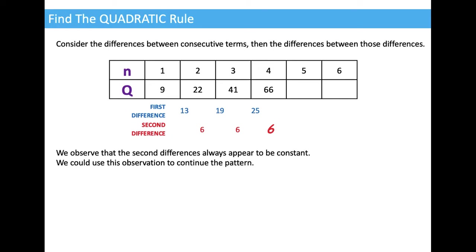We would expect the next first difference to be 31 — that's 25 plus 6. Then we would expect the next term to be 66 plus 31, which is 97. The next second difference would again be 6, so the next first difference would be 37, and therefore the next term would be 97 plus 37, which is 134.